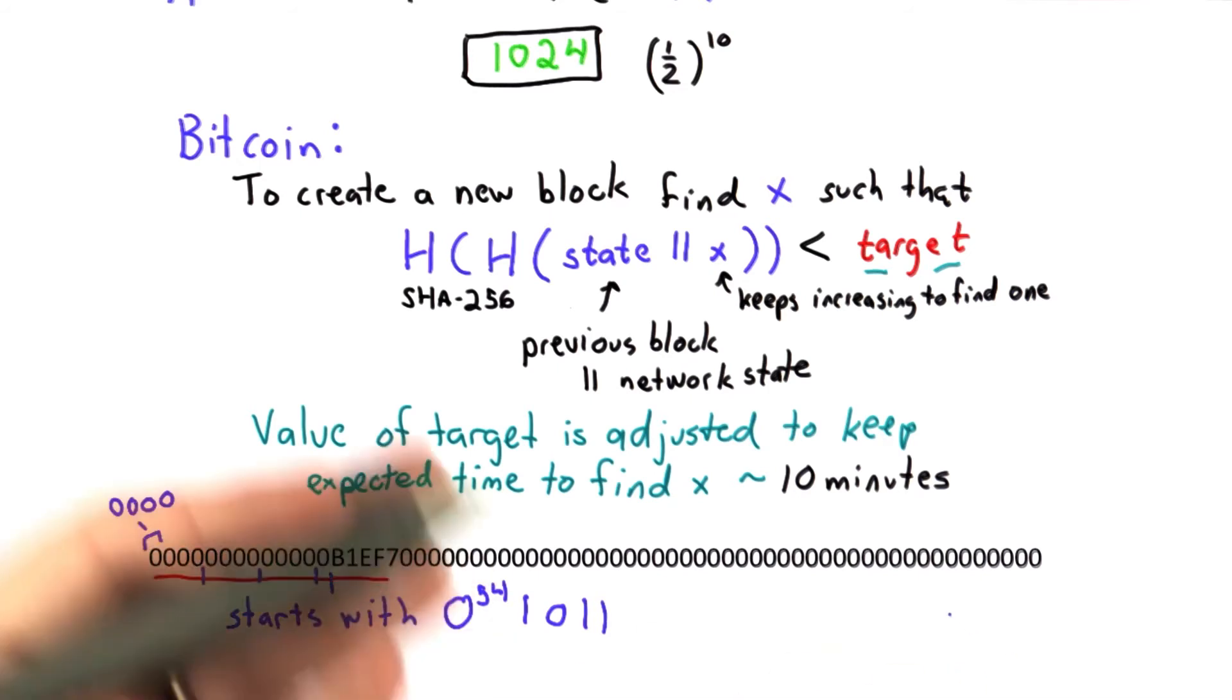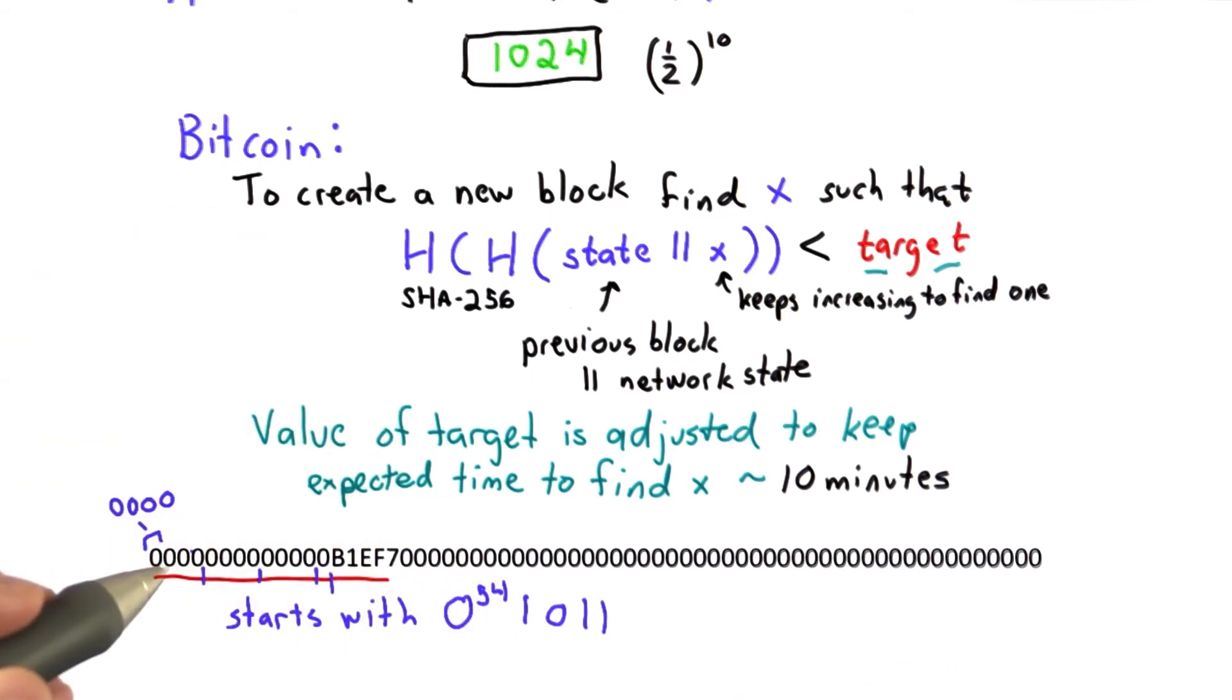That would allow you to earn the value of a new block, which currently is 50 Bitcoins. Each Bitcoin is worth about $5, so finding a hash that hashes to this would be worth about $250.